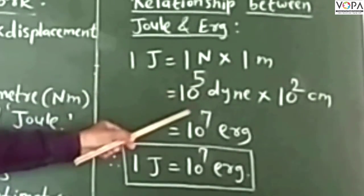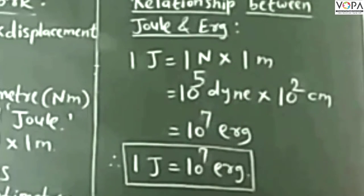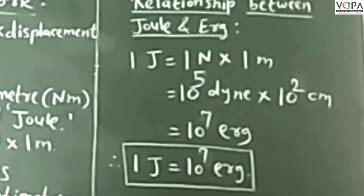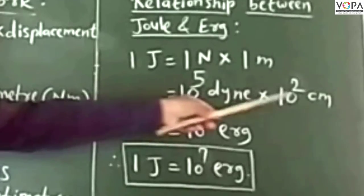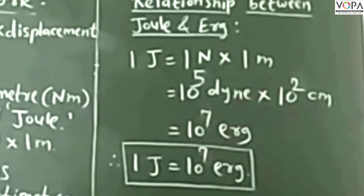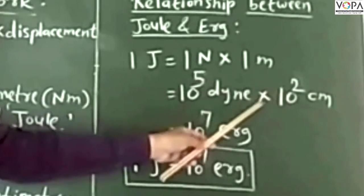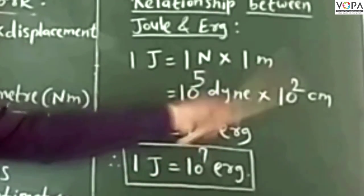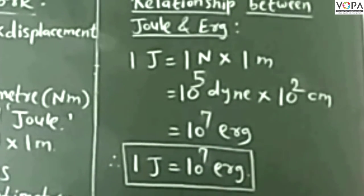Now, 1 Newton is equal to 10 raise to 5 dyne, and 1 meter is equal to 100 centimeter, which can be written as 10 squared centimeter. So we have 10 raise to 5 dyne into 10 squared centimeter. Since the bases are the same and there is a multiplication, by the law of indices we add the exponents: 5 plus 2 equals 7. So we get 10 raise to 7 erg. Therefore, 1 Joule is equal to 10 raise to 7 erg.